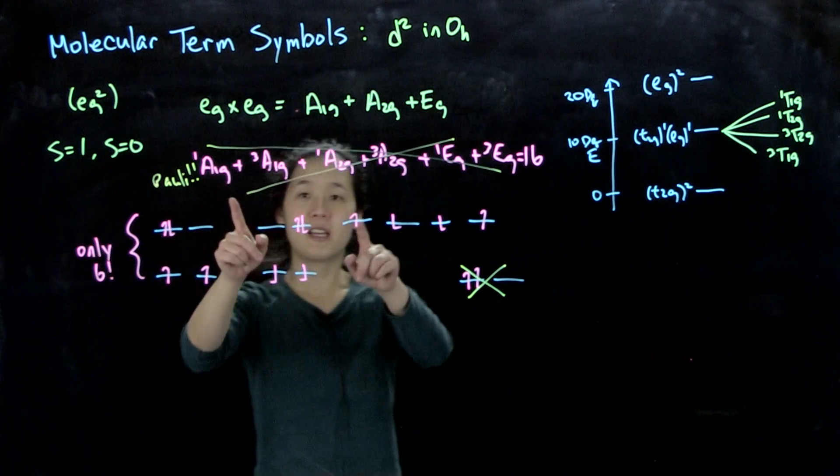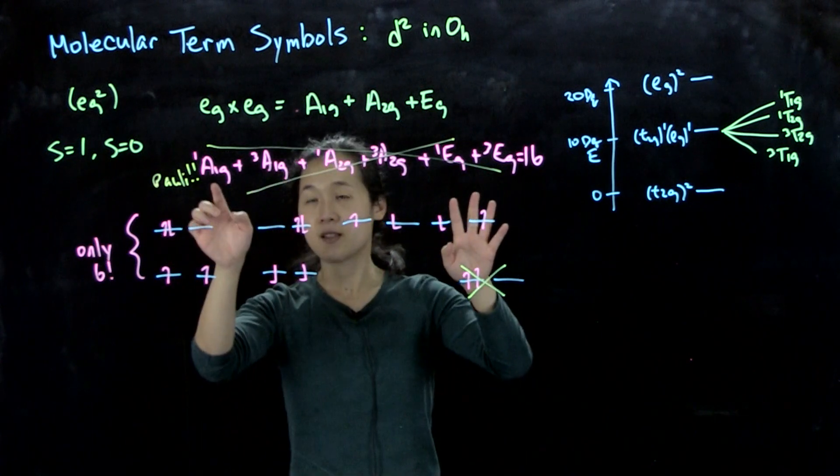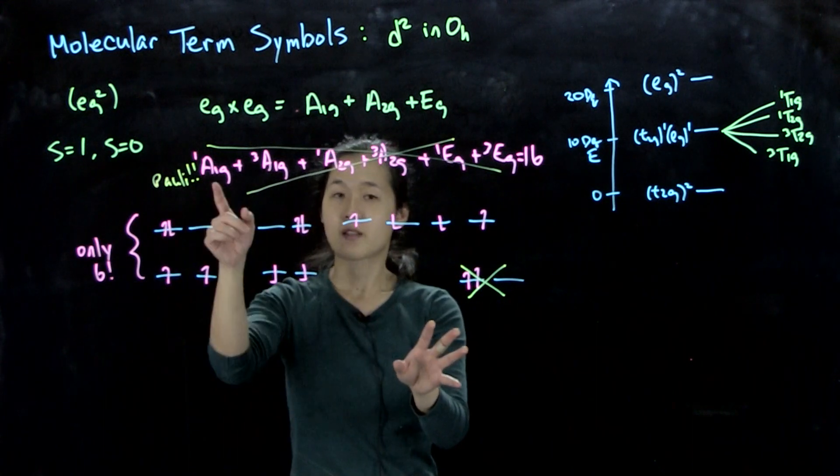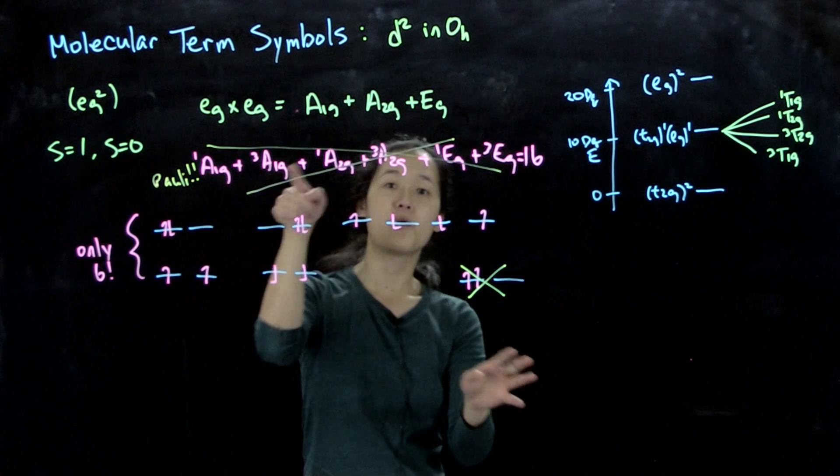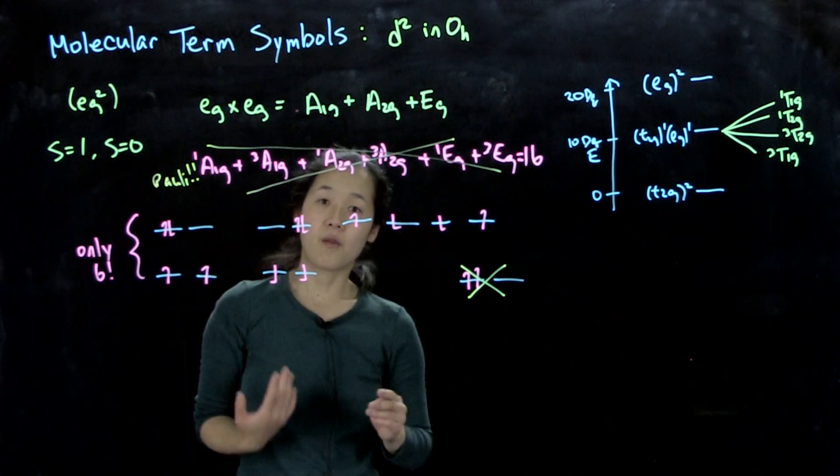The Pauli exclusion principle is not a problem for this t2g1 eg1 orbital because there's no way for any of these two electrons to share the same quantum numbers. So as long as your electrons are different orbitals, you're fine. You can do this method. But if they're the same orbitals, then we have to worry because we have to get rid some of these states. So what this means is that some of these states over here are not real. But the rest of these microstates, these six microstates, have to be described by a few of these terms.